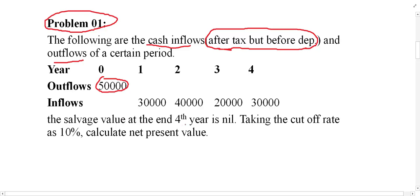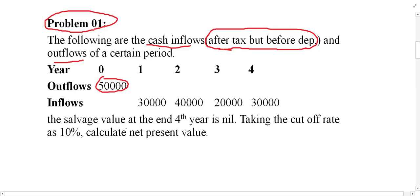The salvage value at the end of the fourth year is nil, meaning there is no salvage value. Taking the cutoff rate as 10 percent — cutoff rate means cost of capital, or discount rate, or time value of money, or interest rate, whatever you call it — calculate the NPV or net present value. These are the given information: outflow, inflow, and the cost of capital or discount rate.